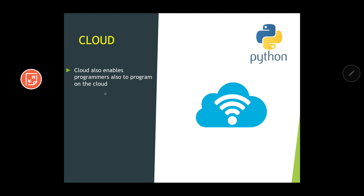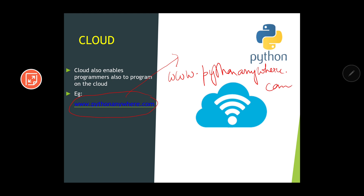Cloud can also be used for programming. For example, you want to do Python programming. Ideally Python is installed on your home computer, but suppose you move to a different location where Python is not installed and you don't want to download and install it again. Instead, you can use the services of a cloud. One such website is www.pythonanywhere.com — if you go to this website, you can do Python programming instantly without even installing Python on your computer. Similarly, various other cloud services are available.